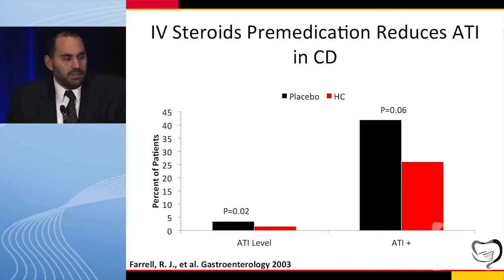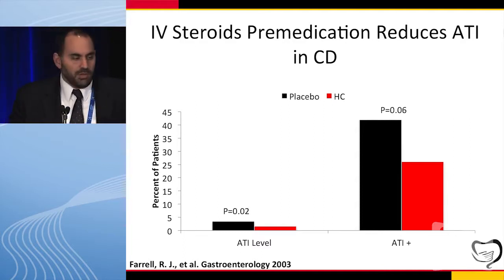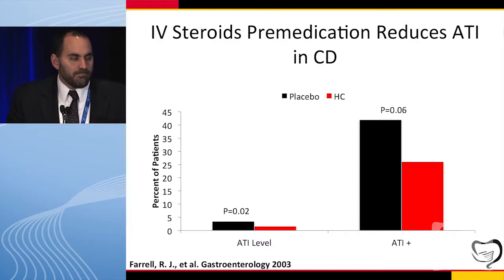This older study — which made me change my practice when I reviewed it last year — looks at use of IV premeds in patients getting infliximab and antibody-to-infliximab (ATI) formation. They found that ATI levels were decreased in patients given 300 milligrams of hydrocortisone before their infliximab infusion, and the percentage of patients who were antibody-positive was cut approximately in half with one dose of hydrocortisone before infusions. So if we're trying to prevent immunogenicity, giving a small dose of steroids before infusion is a very reasonable strategy — and that's what we're doing with all of our infusions at Maryland.